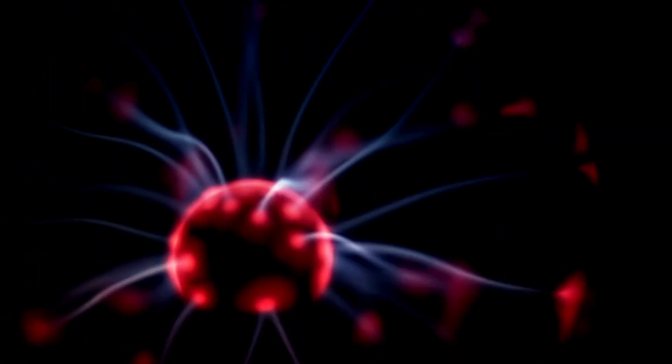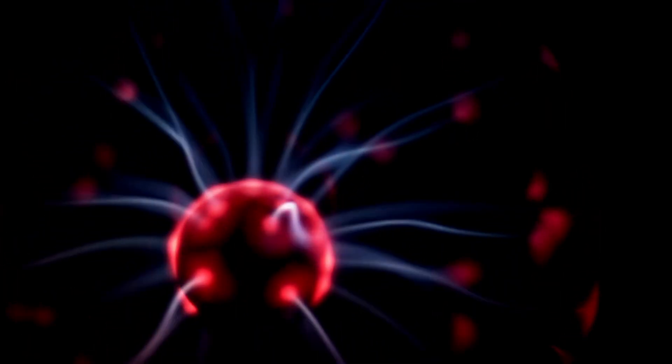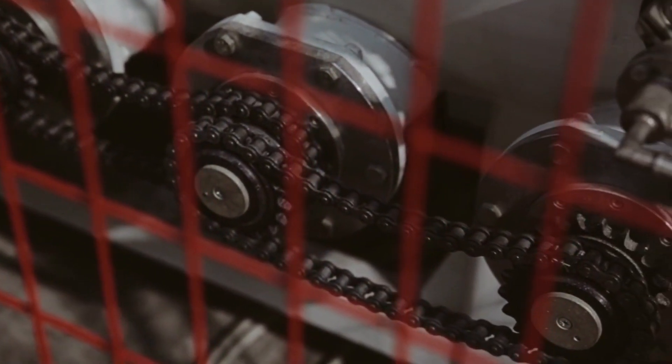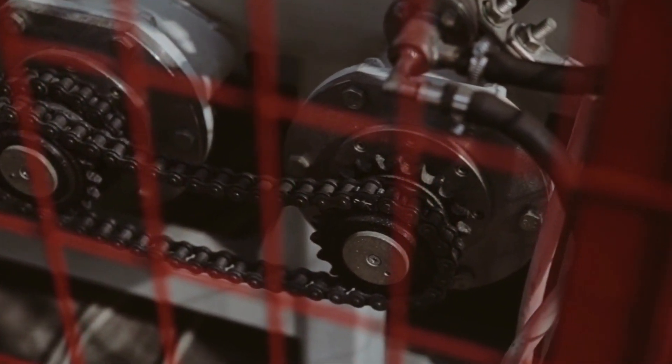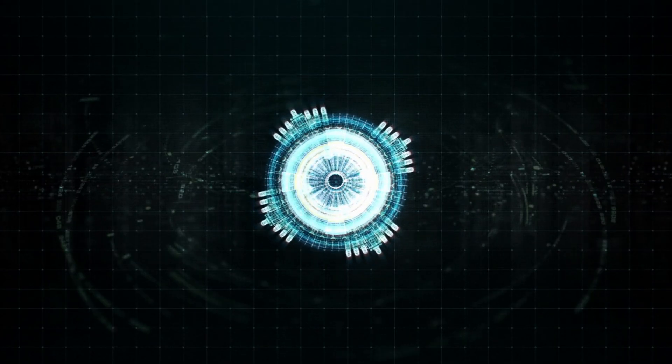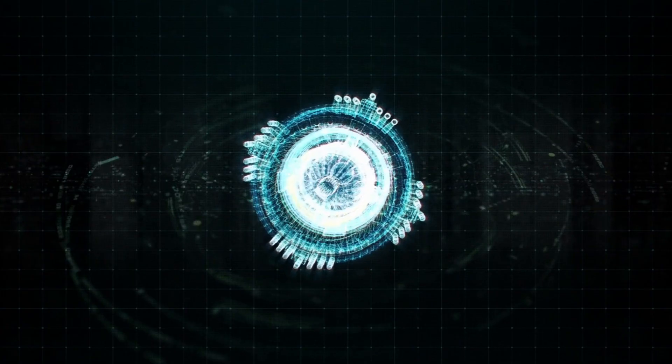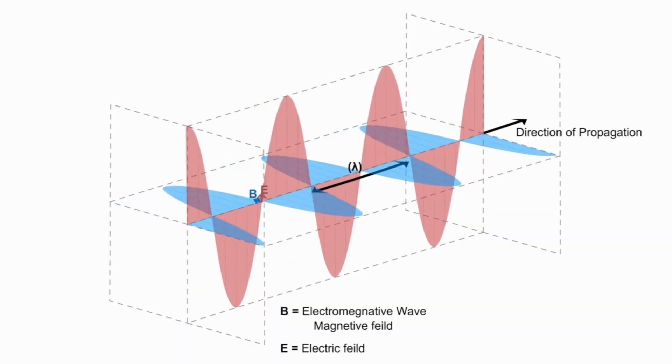Electricity and magnetism have a strong connection with each other and scientists call this electromagnetism. Without it, we would have no electricity in our homes or electric motors. The term comes from knowing that a magnet can create an electric current and an electric current produces magnetism.